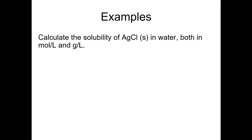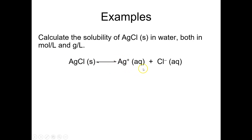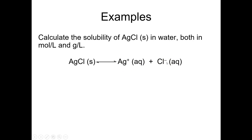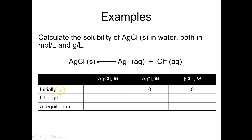Let's take an example — starting with the silver chloride example. Calculate the solubility of silver chloride in water both in terms of molarity and grams per liter. First, write the equilibrium reaction: solid silver chloride in water partially dissolves to give silver ions and chloride ions. Set up an ICE table — we don't concern ourselves with concentrations of a solid, so I've put a dash there. Before anything dissolves, there's no concentration of the product ions. The change is −X for silver chloride, +X for silver, and +X for chloride.